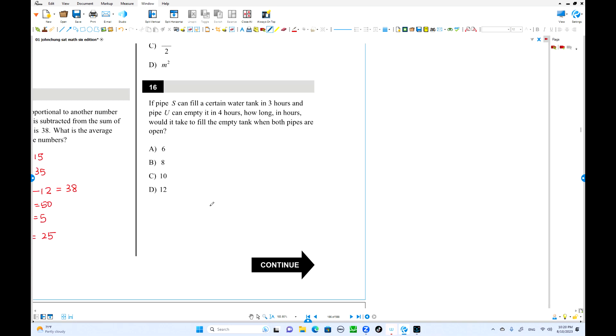Number 16. A pipe can fill a certain water tank in 3 hours. It takes 3 hours to fill the water. Another pipe, this is a drain valve pipe, drains the water from tank. To make it empty, it takes 4 hours. This is a plus, this is a minus. How long would it take to fill the empty tank when both pipes are open? When you open this one, filling tank takes 3 hours. So every hour it fills about 1 third of the tank. This is the rate. I'm going to write the rate here: 1 third per hour.